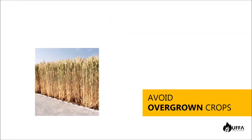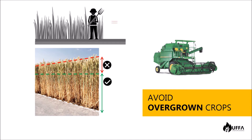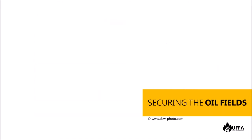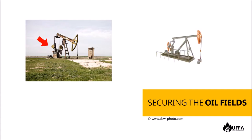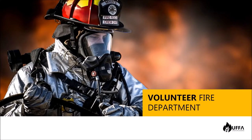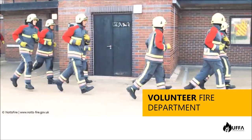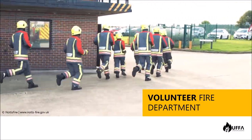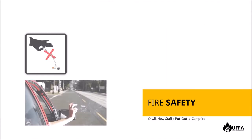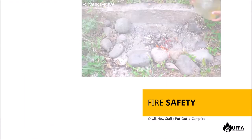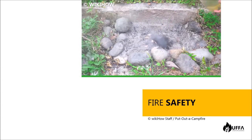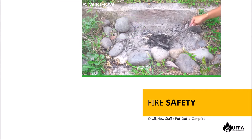Overgrown wheat is the perfect fuel for a wildfire — prevent overgrown crops by harvesting them early. In case of a shortage of combines, you may only harvest the edges of your field. Despite being one of the poorest regions in the Middle East, it has big oil reserves, so taking safety measures to protect pump jacks and crude oil pipelines is crucial. While wildfire is seasonal, it's crucial to rely on trained volunteer firefighters besides permanent crews. Never throw cigarette butts out of a car window, and always put out campfire and picnic fires completely — covering remaining ash with soil can lead to a potential wildfire.